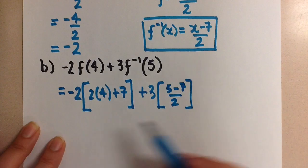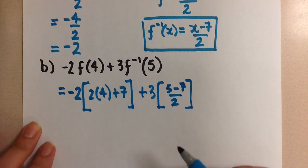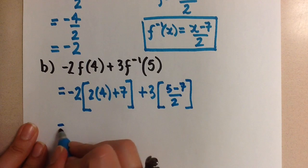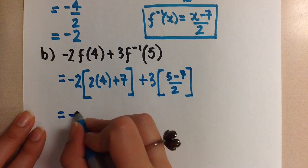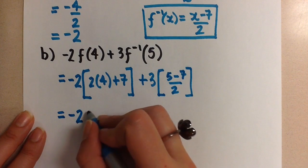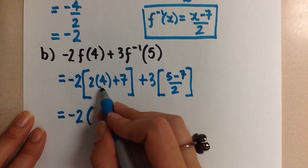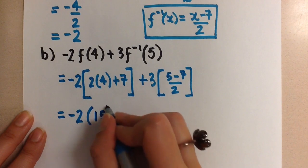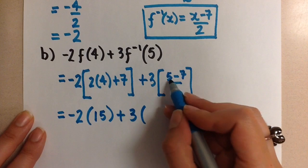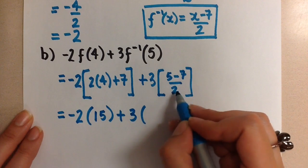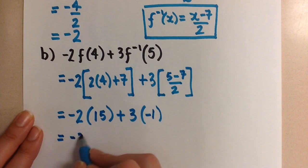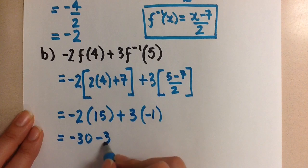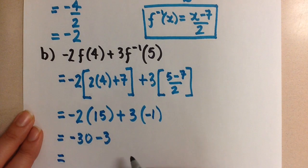Now that we've subbed everything in properly, we can continue by just computing this using proper order of operations. And we'll get the final value for this expression. So here we have negative 2 times, 2 times 4 is 8, plus 7 is 15, plus 3. 5 minus 7 is negative 2, divided by 2 is negative 1. Now we multiply. Here we get negative 30. And here we get minus 3. And our final value for this expression is negative 33.